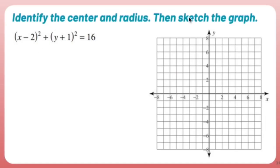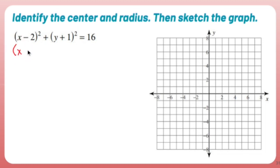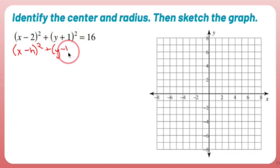Identify the center and radius, then sketch the graph. Well, obviously if it's asking me to find the radius, I'm dealing with a circle here. The formula for a circle is as follows: x minus h squared plus y minus k squared equals r squared.